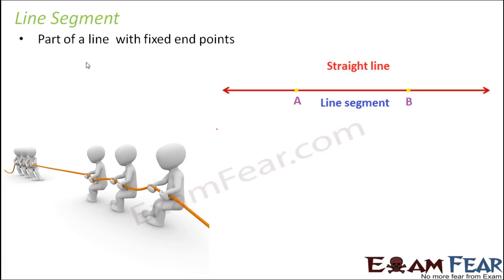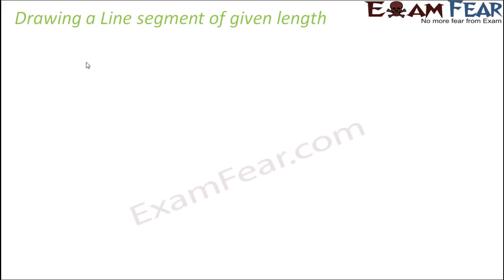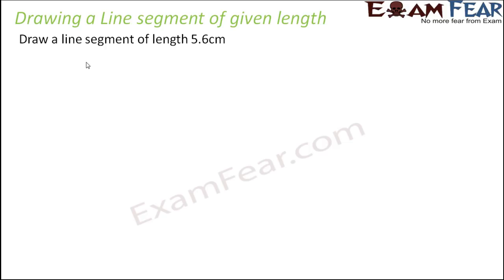So now let's see how we draw a line segment. Drawing a line segment is pretty simple. Let's say you have to draw a line segment of length 5.6 centimeters, because length is the parameter that defines a line segment. There are two options: you can construct a line segment using only a ruler, or you can use a ruler as well as a compass.